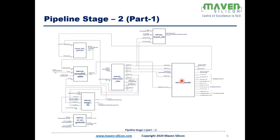Stage 2 has multiple sub-blocks, split into two parts. Part 1 includes a branch unit, immediate generator, immediate adder, integer file block, write enable generator, instruction mux, and a decoder.